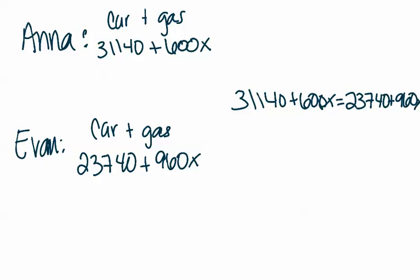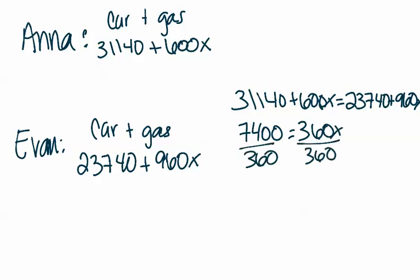So if you solve your equation, subtract your 23,740 from each side, you'll get 7,400. And then subtract your 600 from each side equals 360x divided by 360. So we have that x is 20.55 repeating. Just keep in mind that the directions are asking for the nearest whole number. So we're going to pop that up to 21 years.